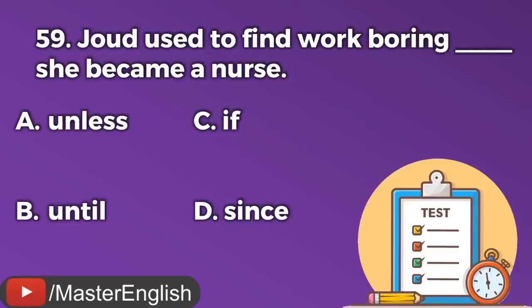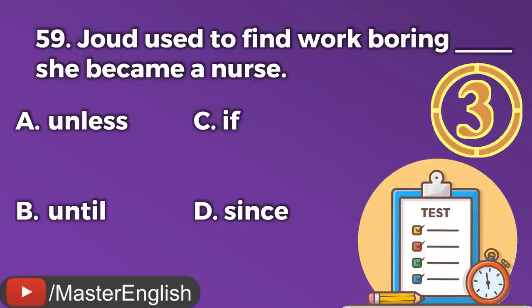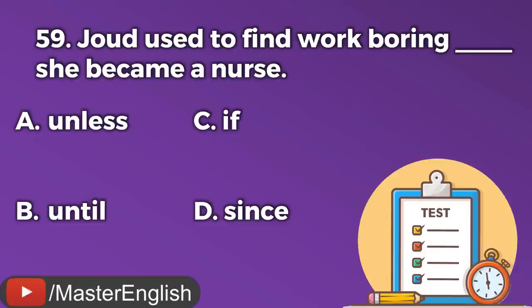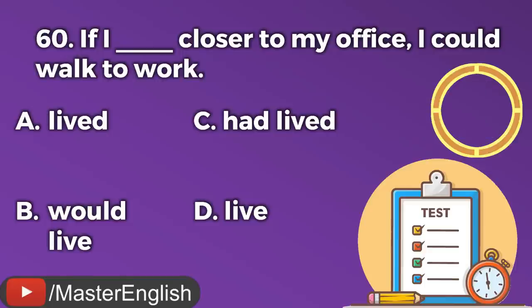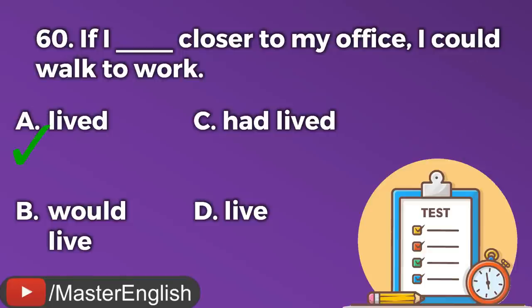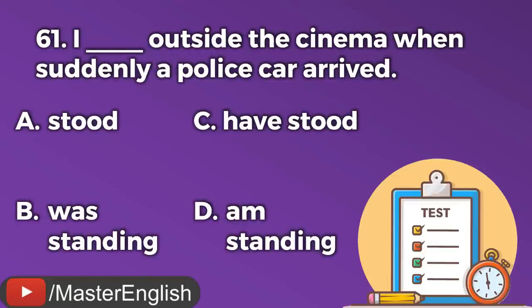Question number fifty-nine. Jude used to find work boring ___ she became a nurse. A: Unless. B: Until. C: If. D: Since. The correct answer is B: Until. Jude used to find work boring until she became a nurse. Question number sixty. If I ___ closer to my office, I could walk to work. A: Lived. B: Would live. C: Had lived. D: Live. The correct answer is A: Lived. If I lived closer to my office, I could walk to work.